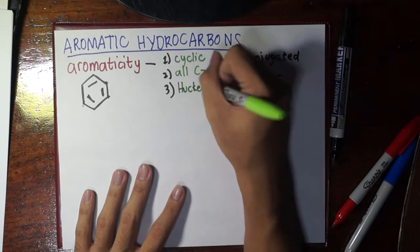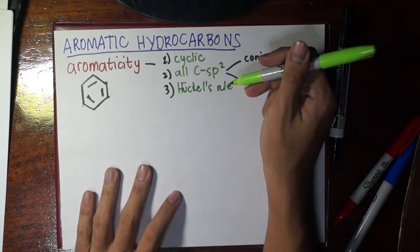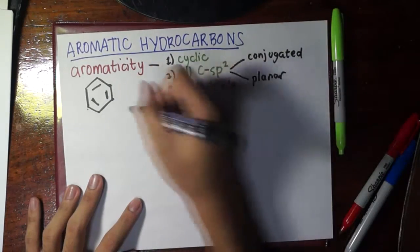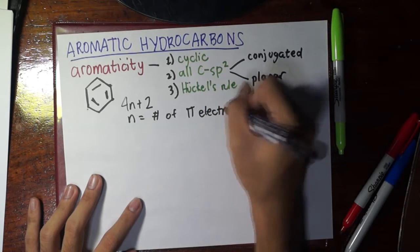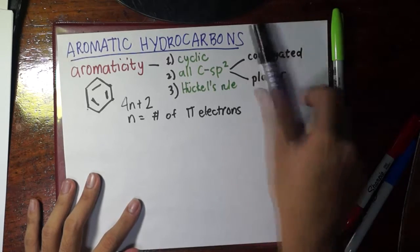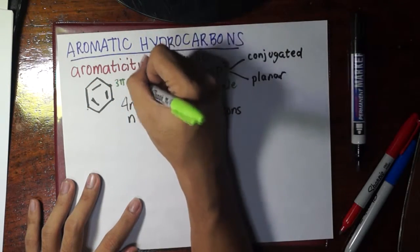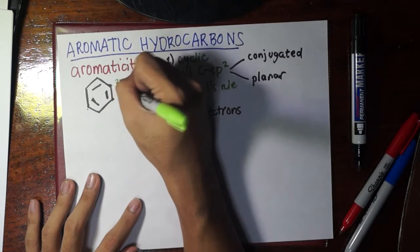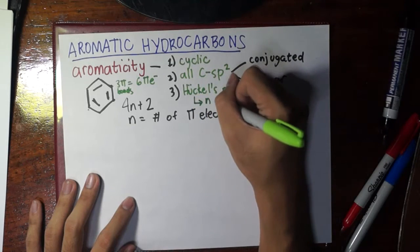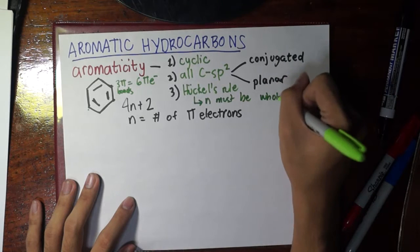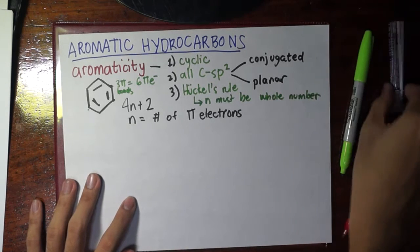The third requirement involves a little math — it's named after its discoverer: Hückel's rule. Hückel's rule has the formula 4n + 2, where n is the number of pi electrons — take note, not pi bonds. For example in benzene, we have three pi bonds, which translates to six pi electrons. In Hückel's rule, n must be a whole number; the moment you see 0.5, 1.5, or 2.5, that already violates Hückel's rule.